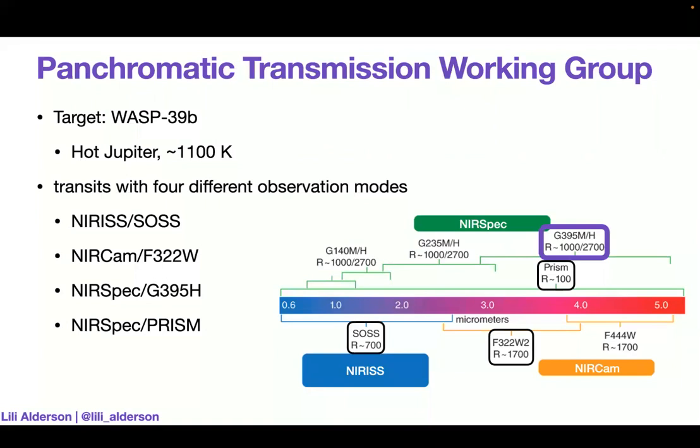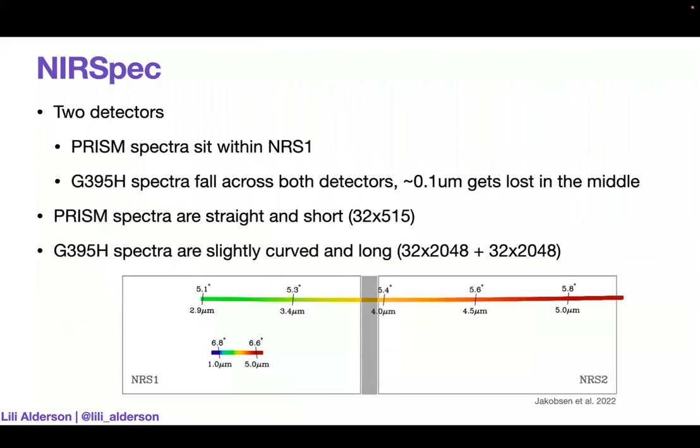What do we think the best precisions we can achieve with JWST is as soon as possible after the launch? So the community could be prepared for cycle two and for analyzing their own data. And primarily I've been in the panchromatic transmission working group. And here our aim is to look at one target, WASP-39b, which is a hot Jupiter, a little bit colder than WASP-17b, and look at four different observation modes: NIRISS, NIRCam, and two different modes on NIRSpec, PRISM and G395H, and build up this really comprehensive transmission spectrum from about 0.6 to about 5 microns. And I'm primarily going to talk about the G395H observations because I actually led that paper. NIRSpec consists of two detectors, NRS1 and NRS2. And while the PRISM spectra, which are nice and short, fit really nicely within NRS1, the G395H spectra fall across both detectors. And we lose a little bit of information in the middle there.